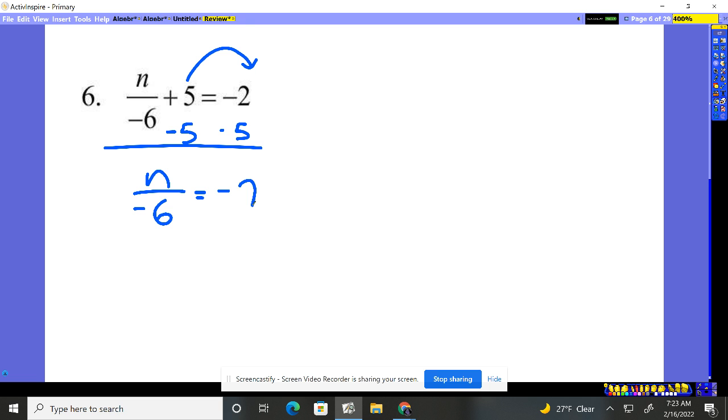Now, how do we undo dividing? We multiply by negative six. Multiply by negative six, do it to both sides. Goes away here. N equals negative times negative is positive, and seven times six, 42.